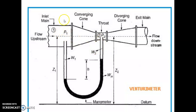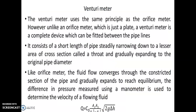Section 1-1 is taken at the upstream of the pipe, and section 2 will be at the throat. A manometer is inserted between section 1-1 and section 2-2, and this measures the manometric head. Velocity is measured using the formula: Q = CD × A1 × A2 / √(A1² - A2²) × √(2GH).